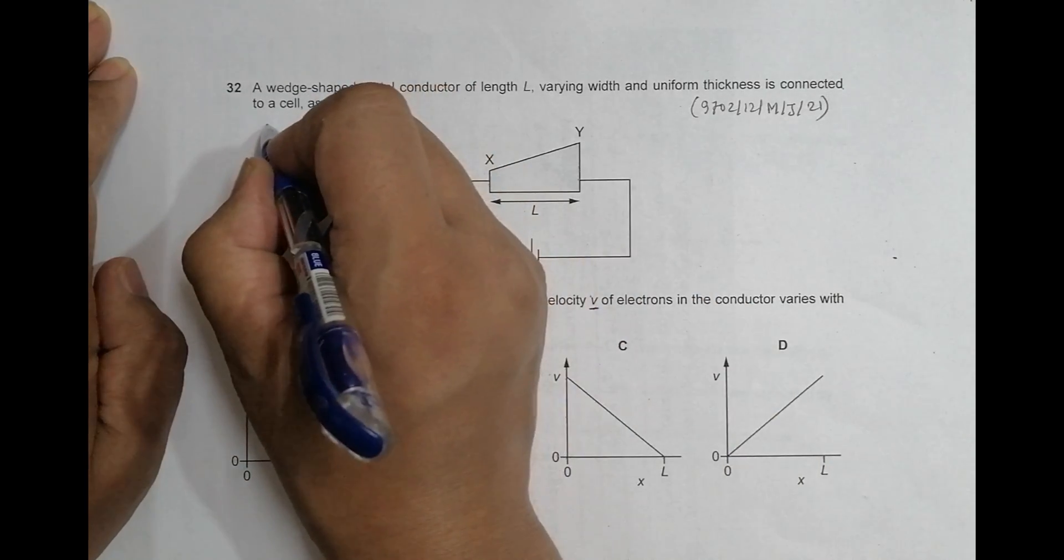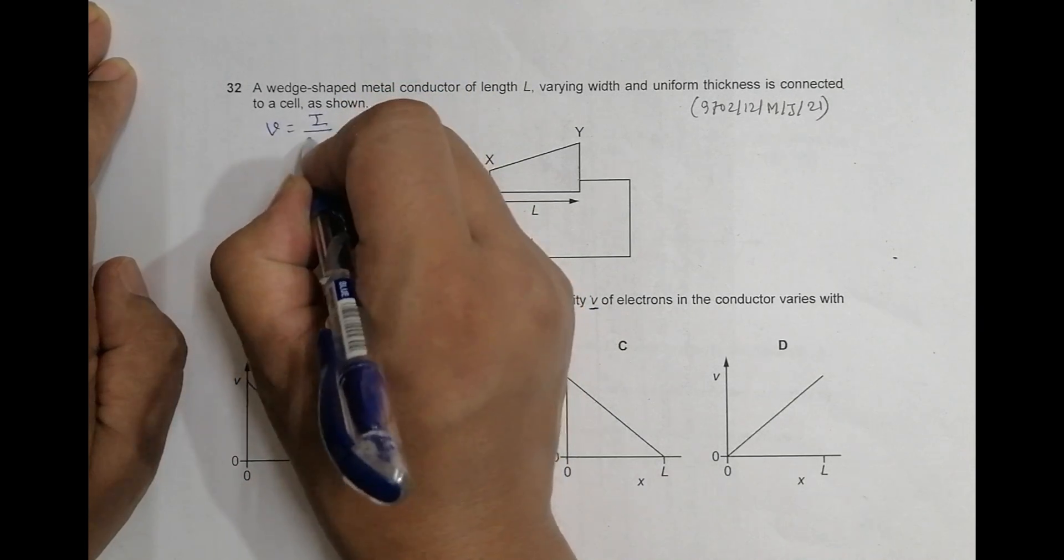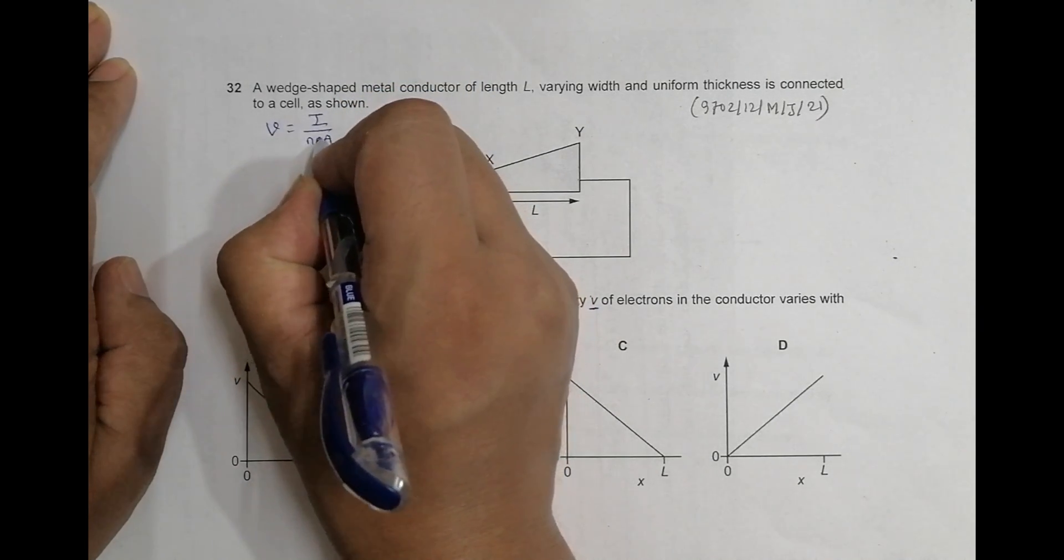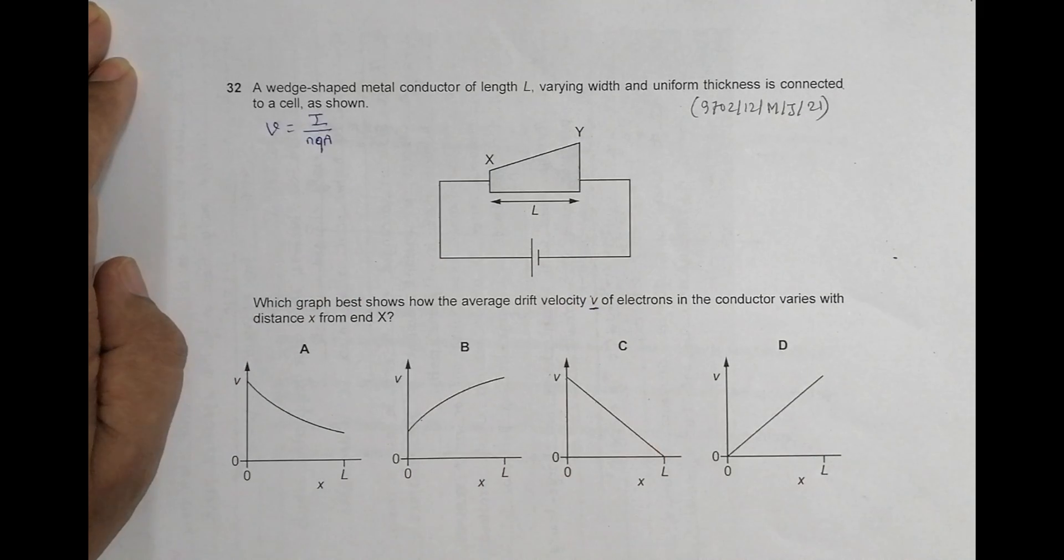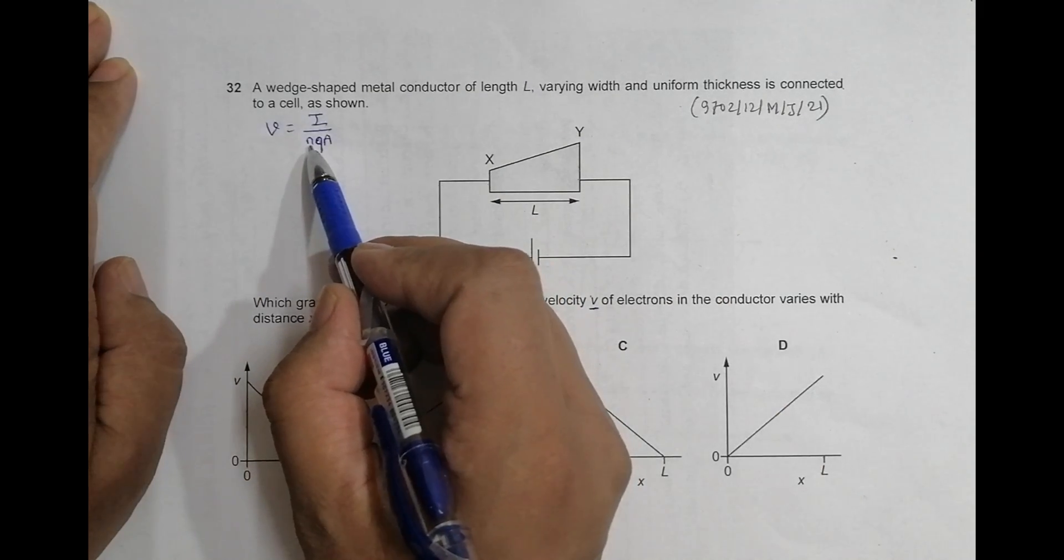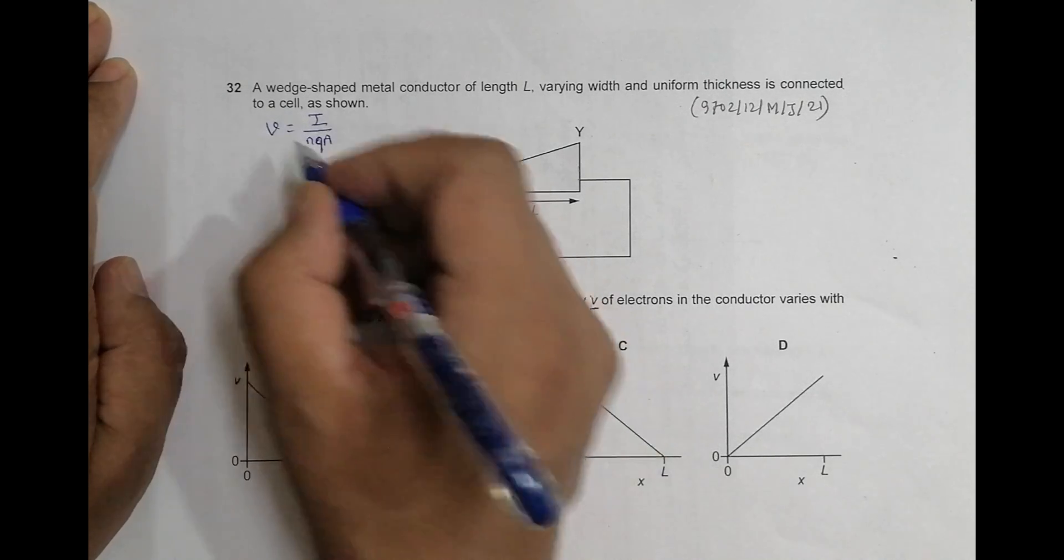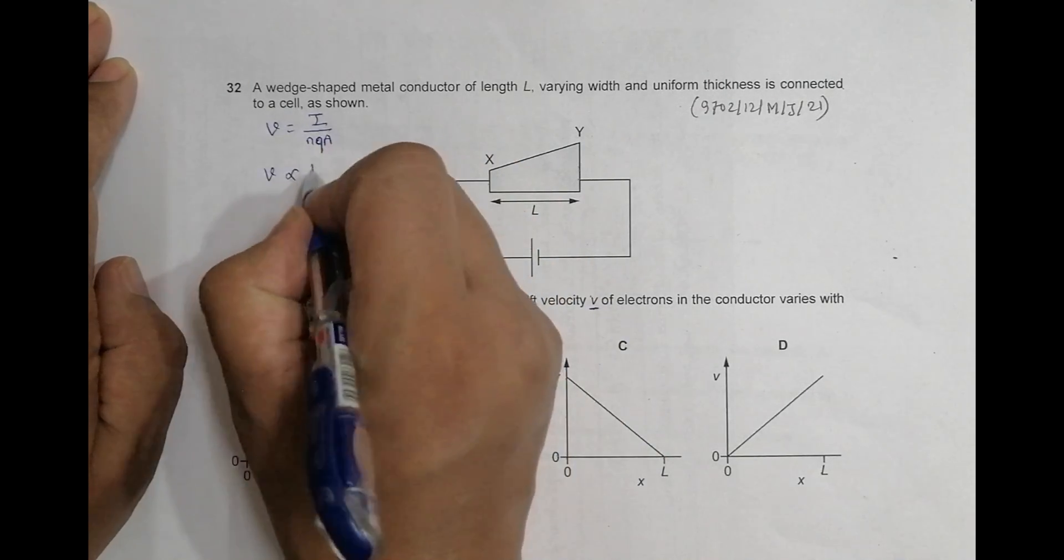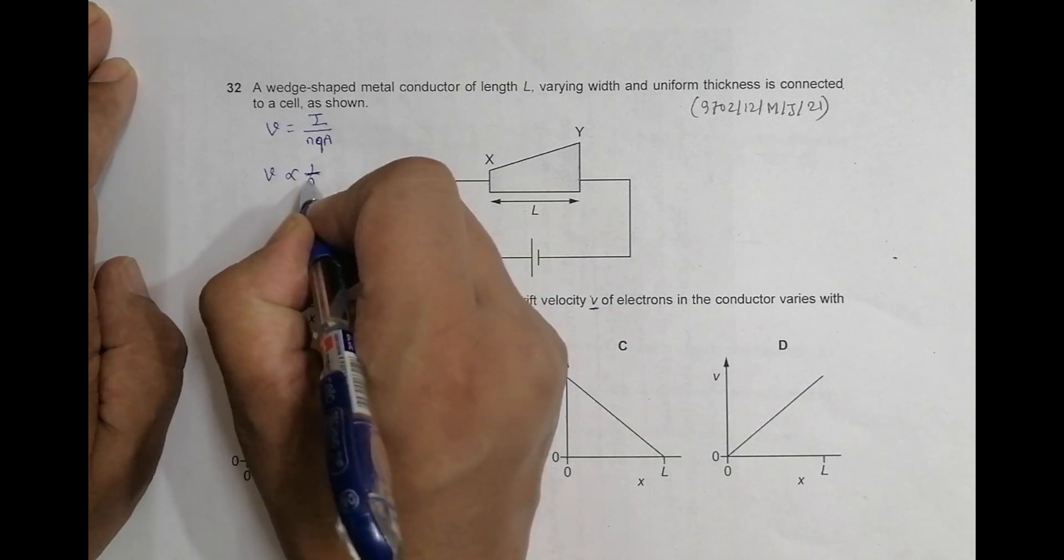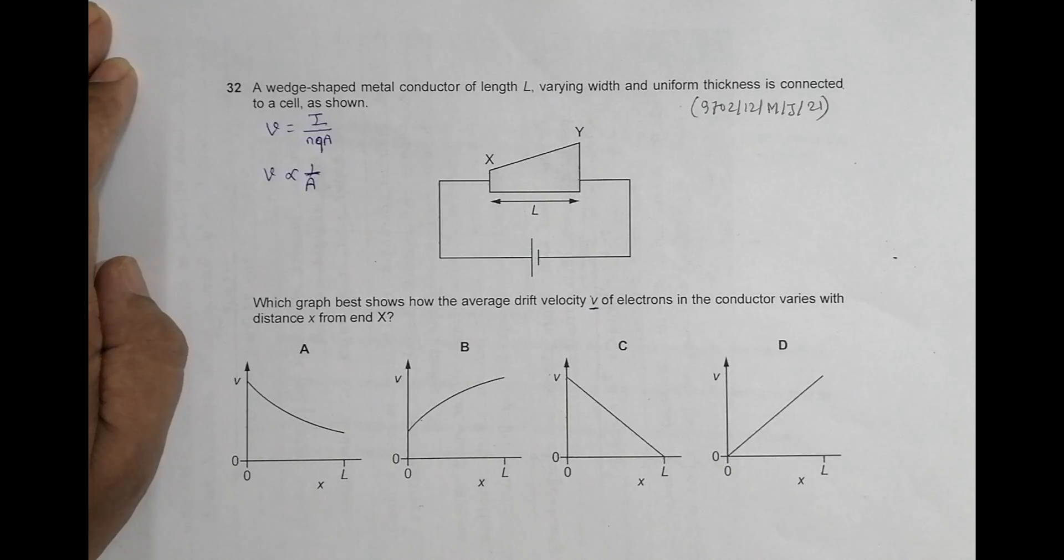The relation for drift velocity with other quantities is V equal to I by NEA, or NQA we can say. So we have constant current here everywhere. N is constant which is free electron density. The universal charge of electron E is a constant, so that's why I have V proportional to 1 by A. So that means the more the cross section, less will be V, and the less the cross section, more V.